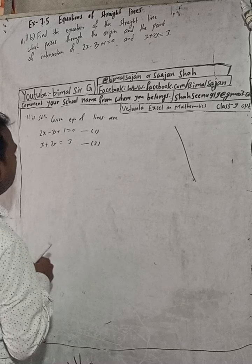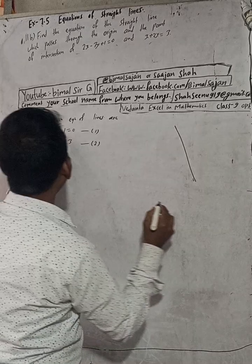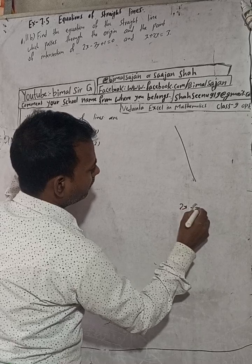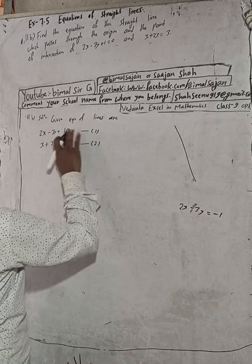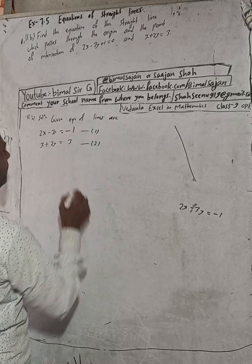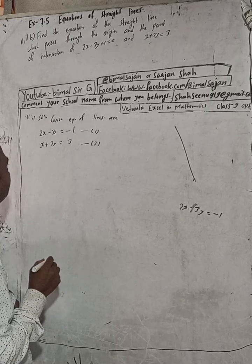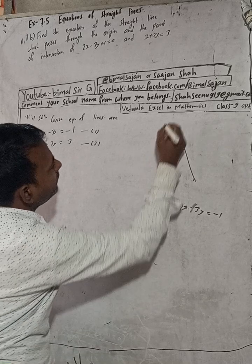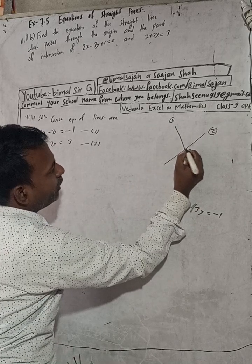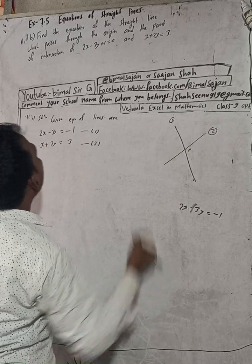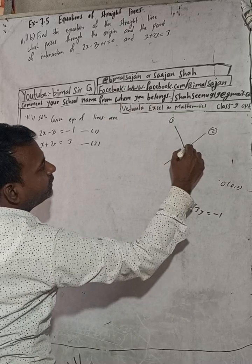And x plus 2y is equal to 3. These two lines intersect each other; we have to find this point of intersection. One point is given — the origin, which is O(0, 0). And we have to find the equation of line OP, where P is the point of intersection.